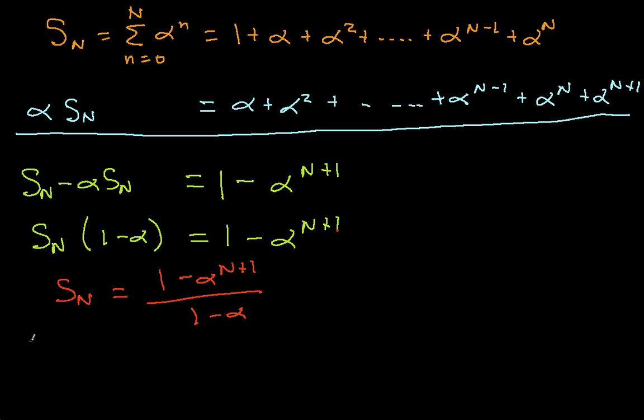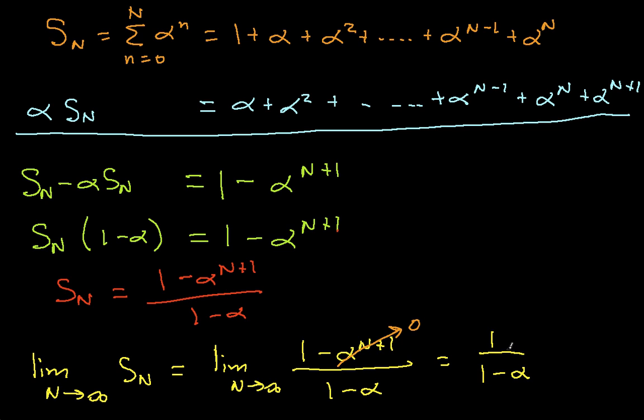Now, in the case where I want the sum going from n, little n going from 0 to infinity, what I'm looking for is the limit as cap N goes to infinity of this S_N, which is the limit as cap N goes to infinity of 1 minus alpha to the N plus 1 over 1 minus alpha. Now, as long as the magnitude of alpha is less than 1, every time I increase N, I make this whole guy smaller. And so as N goes off to infinity, this term here approaches 0, leaving me with 1 over 1 minus alpha, which is the result we had.